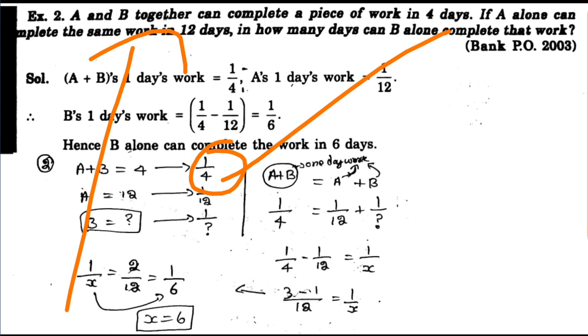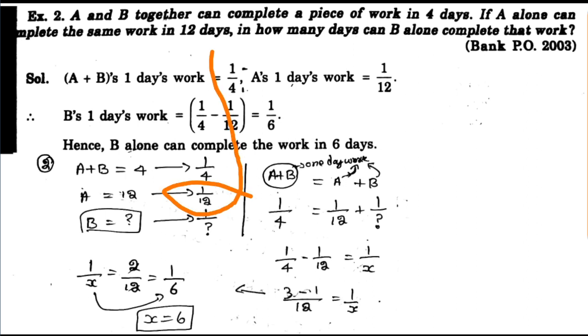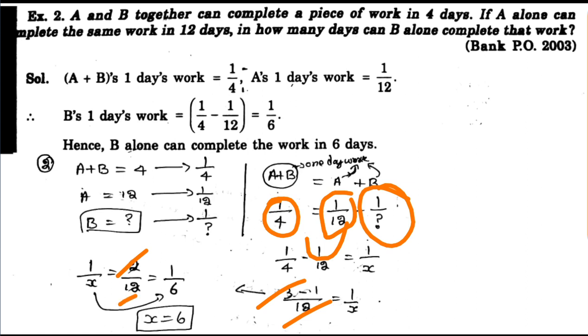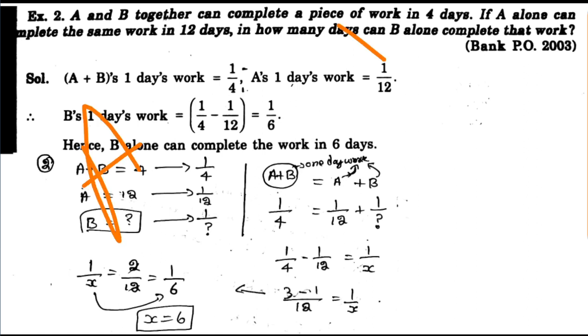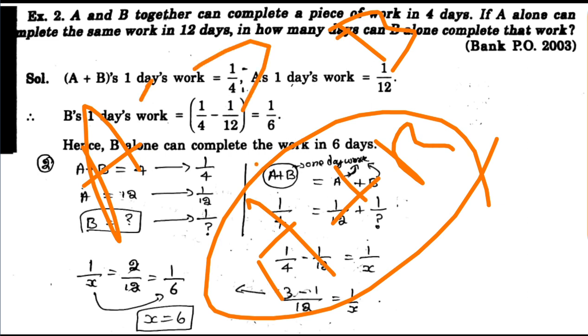If A alone can complete the same job in 12 days, we can calculate in how many days B alone can complete the work. If A and B together can complete it in 4 days, and A alone can complete the same job in 12 days, we can compute the answer.